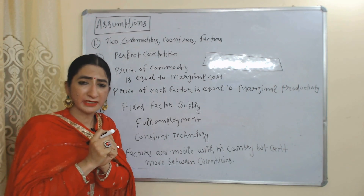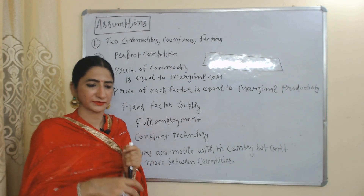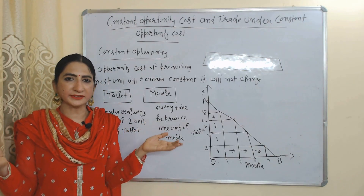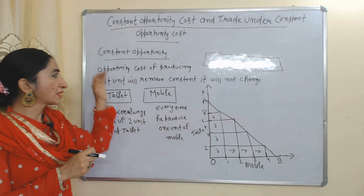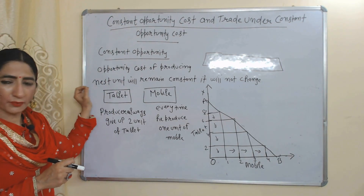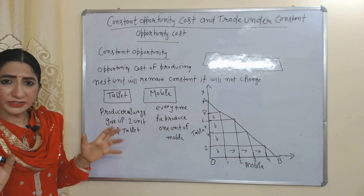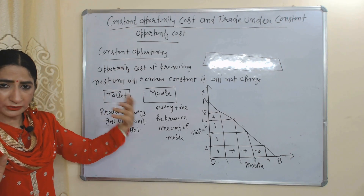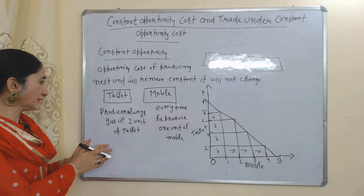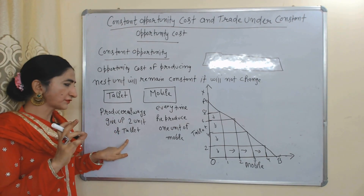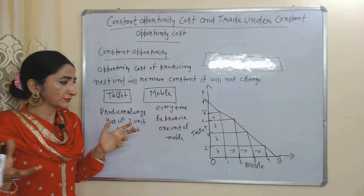For example, labor can work anywhere within one country but cannot go for work between countries. First of all, we will see what is constant opportunity cost and how we can do trade under it. Constant opportunity cost means opportunity cost of producing next unit will remain constant — it will not change. For example, a producer always gives up two units of tablet in order to produce one more unit of mobile; that is called constant opportunity cost.